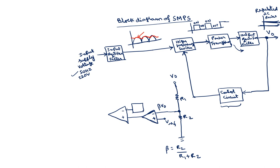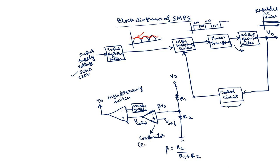This output is applied to a PWM (Pulse Width Modulator), which can also be implemented using an operational amplifier. A triangular wave is generated, which is used to control the high frequency switch. The output of the comparator is the V control voltage, which acts as the error amplifier output discussed in earlier lectures.